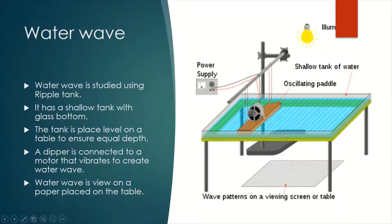Ripple Tank is a shallow tank with the bottom made of glass or any transparent material. We place water onto the tank, but the depth of the water is not very deep, only a few centimeters deep.